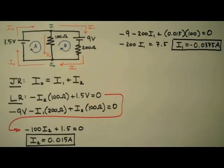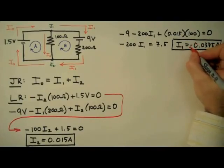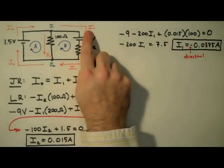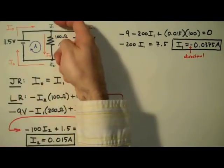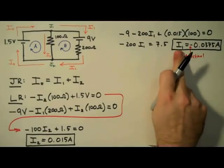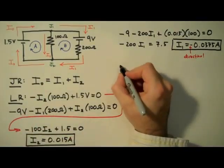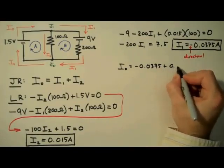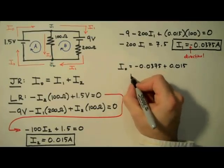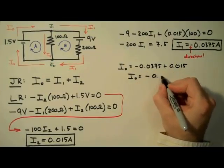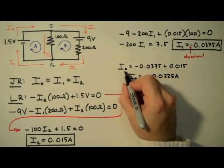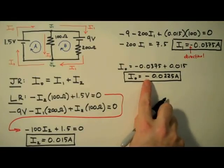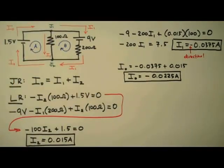So what does this negative sign tell us? This negative sign tells us that the direction we chose for I1 is the wrong direction. Remember how we picked it arbitrarily at the beginning of the problem? Here's where we find out that the actual direction of positive charge flow is the other way — no harm, no foul. Now we know the correct direction of the currents. We're going to plug I1 and I2 into the junction rule to determine I0. So I0 equals negative 0.0375 plus 0.015, which gives I0 equals negative 0.0225 amps, or negative 22.5 milliamps. Again, this negative sign tells us the direction we assigned for current is not the actual direction of positive charge flow.